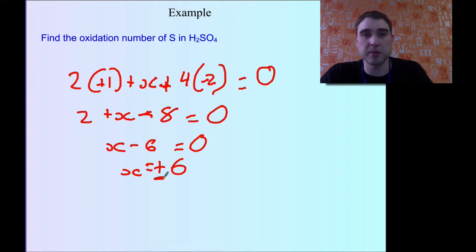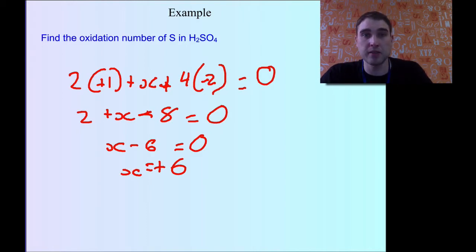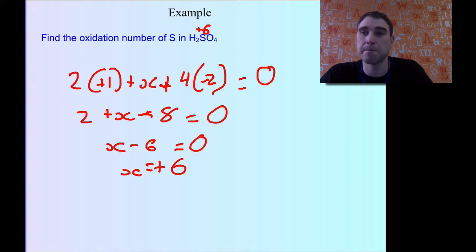Make sure you always put the sign — that's very important. So in this case, the oxidation number of sulfur in sulfuric acid is plus 6. The way we represent that is we write plus 6 on top.